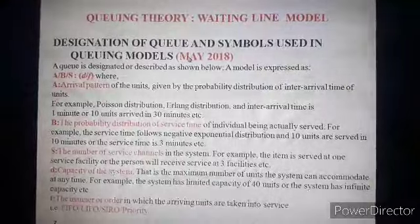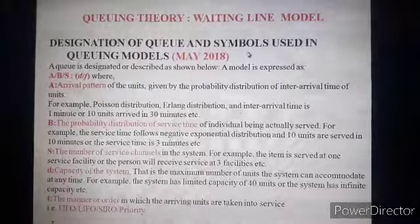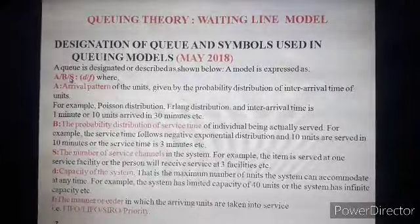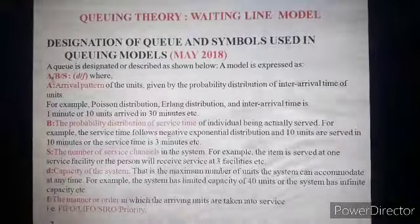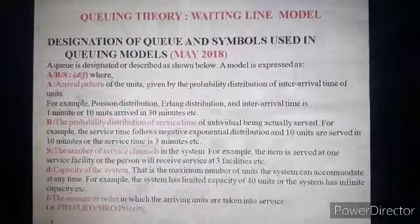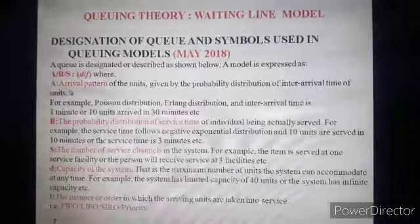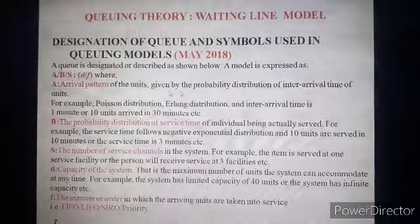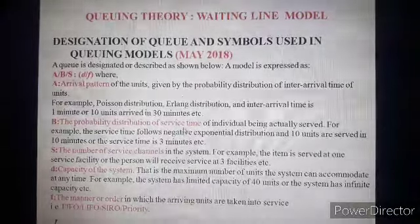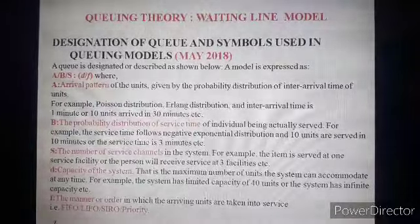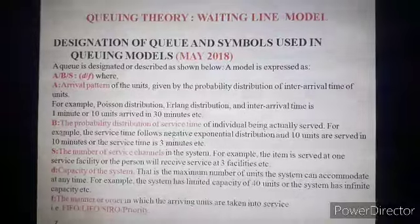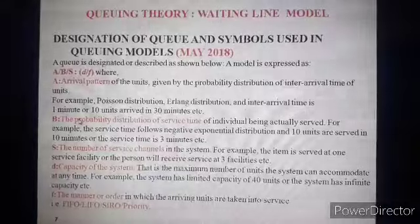Let us discuss the symbols and notations used in different models. We define a queuing model by the designation: A / B / s : d / F. Here, capital A stands for the arrival pattern, given by the probability distribution of inter-arrival time. Capital B is the probability distribution of service time of the individual being served — for example, service time follows a negative exponential distribution and 10 units are served in 10 minutes. These A and B are the most important parameters defining the system.